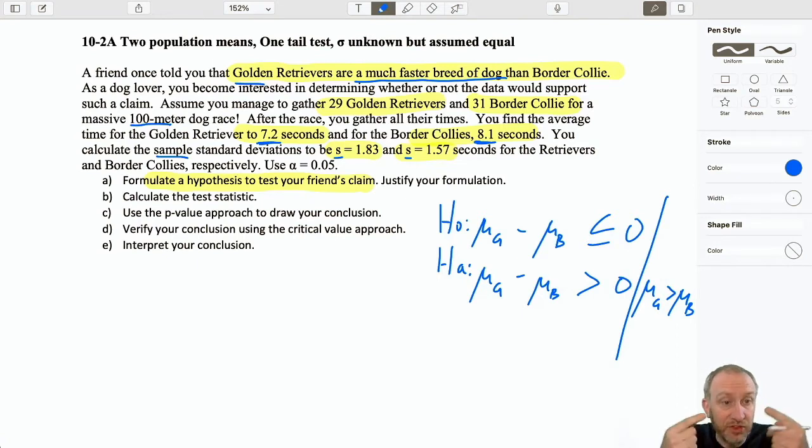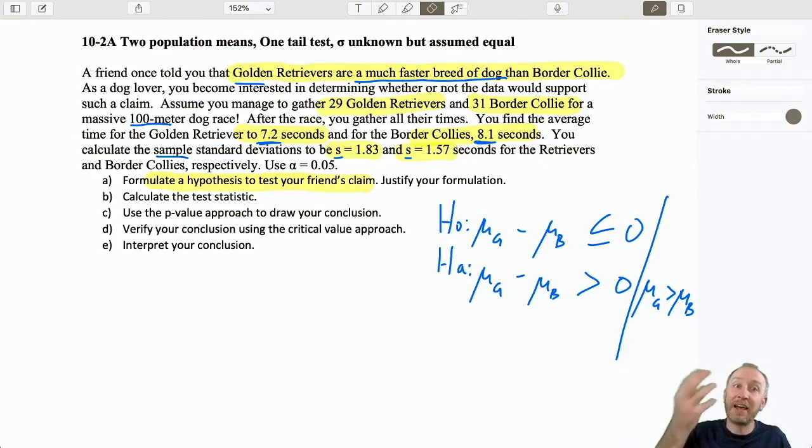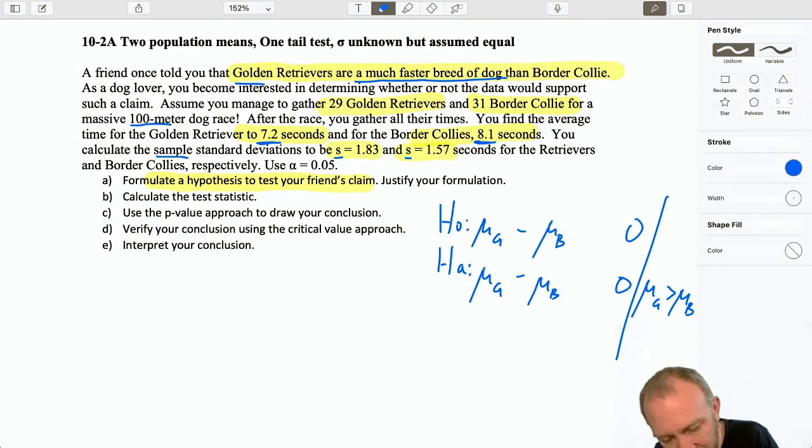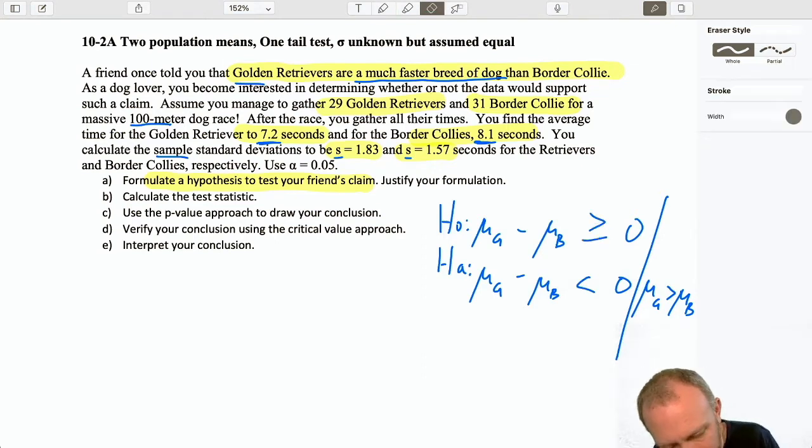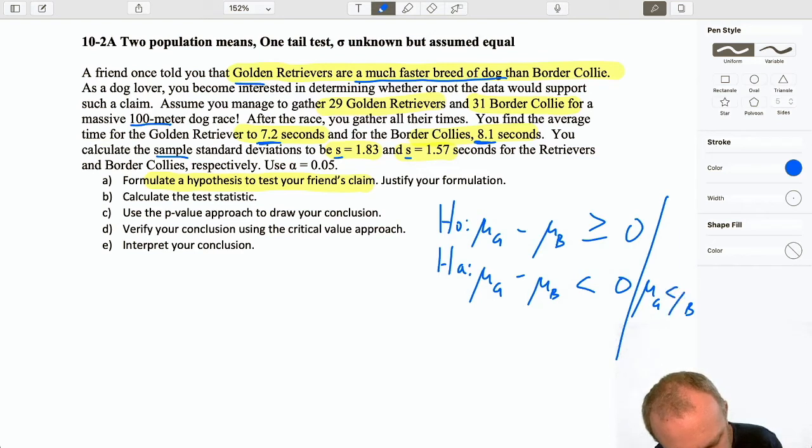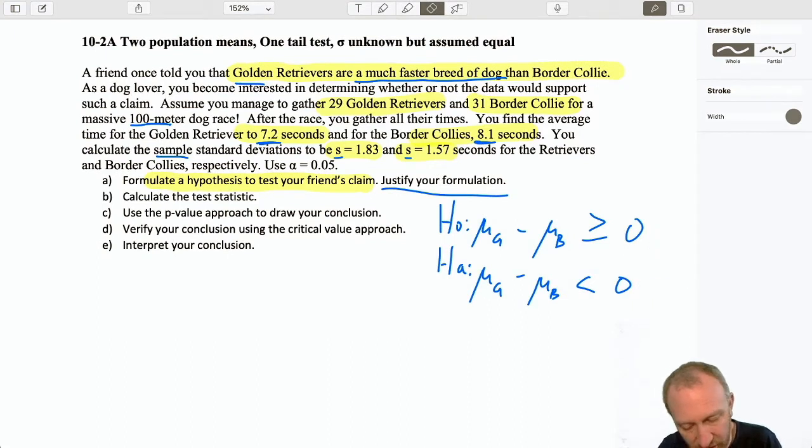Look at what the data is. The data here is in seconds. It's in time. The amount of time it took to run a fixed distance. So, a faster dog is not one that has a higher time. It's one that has a lower time. So, I would write this like that. It's a lower tail test. We formulate the test this way. So that if the evidence supports the null hypothesis, the golden retriever is taking at least as much time, if not more. If the evidence supports the alternative hypothesis, now I have evidence that supports my friend's claim. That they are, in fact, a faster breed of dog because they're taking less time to run that race. So, I have this set up as a lower tail test.